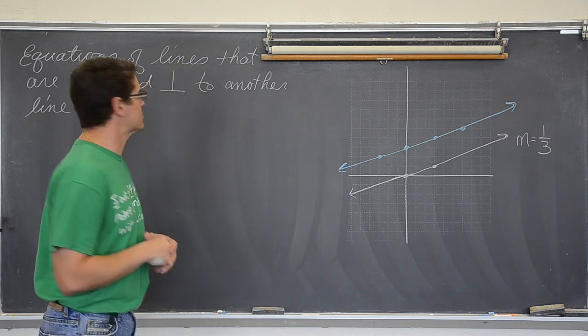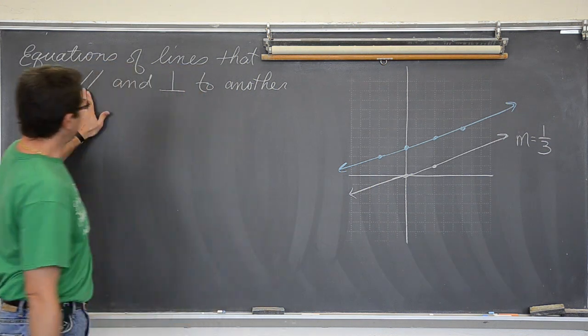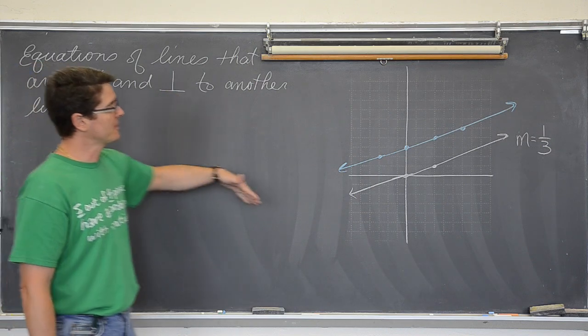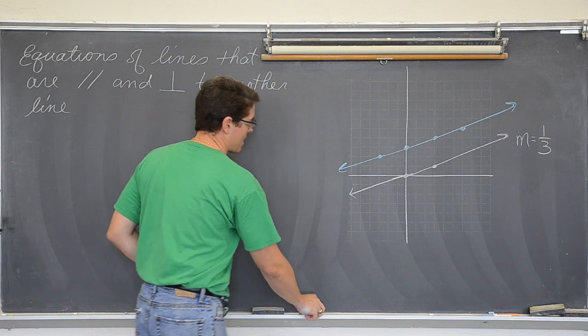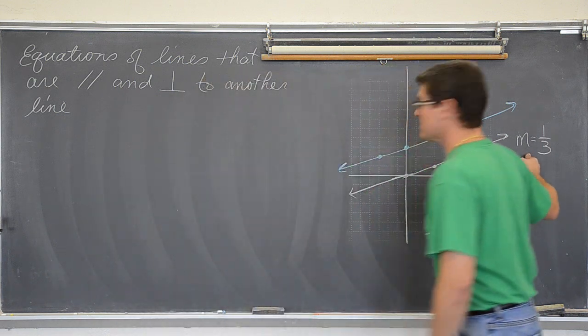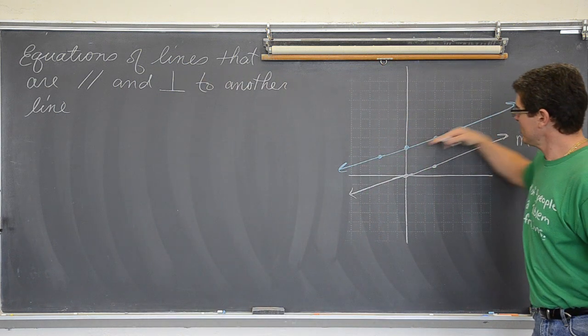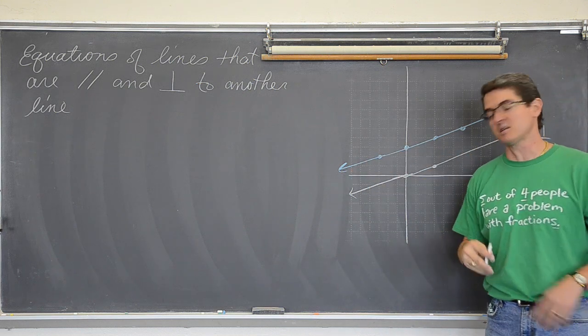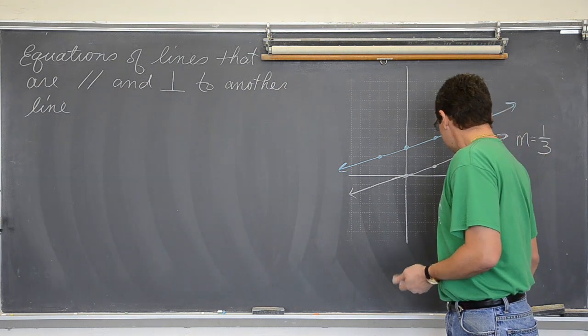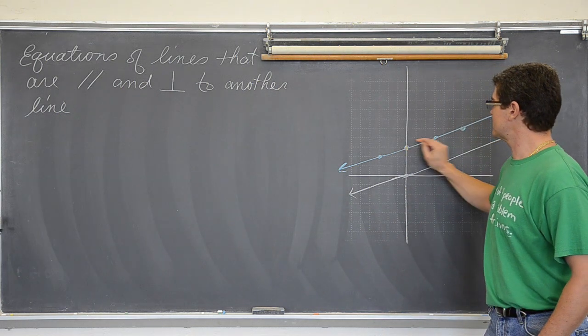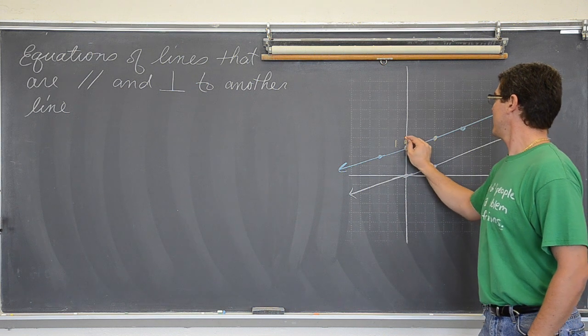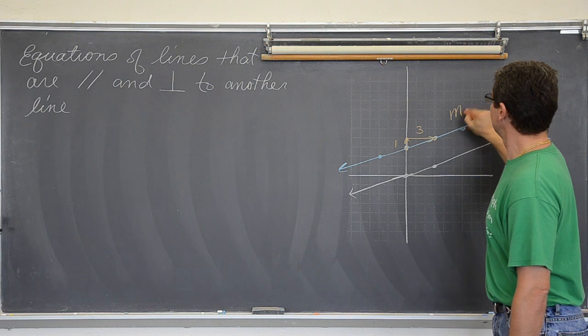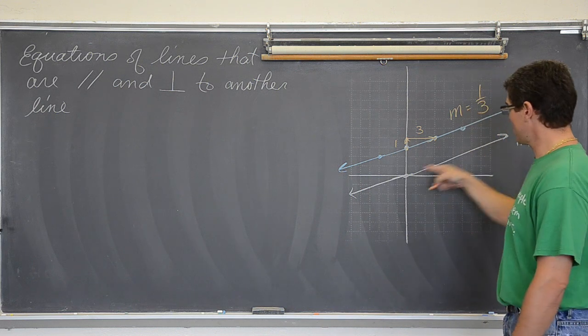So let's first make sure we completely understand the idea of parallel lines or slopes and perpendicular slopes. Here we have a diagram of a white line. It crosses through the origin and its slope is one-third. On the blue line here I have got a parallel line. Now why are these two lines parallel besides the fact that they look really similar?